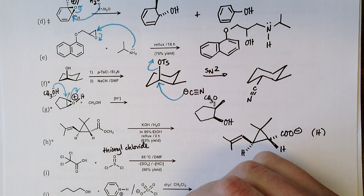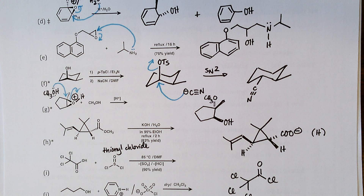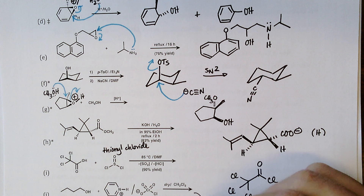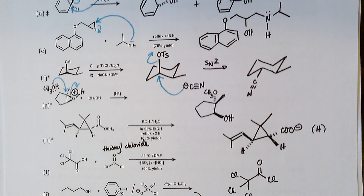Part j: under dry conditions in methylene chloride, pyridinium chlorochromate (PCC) oxidizes the primary alcohol of 1-butanol to give the aldehyde butanal, also known as butyraldehyde.